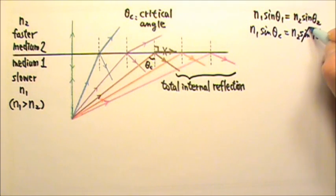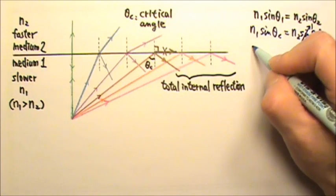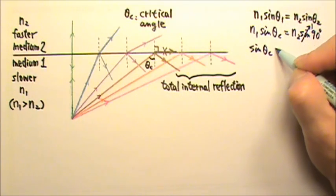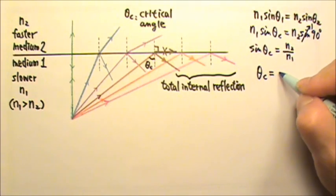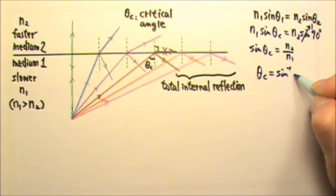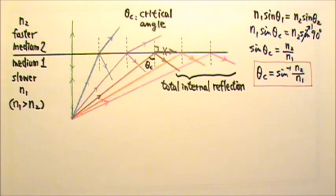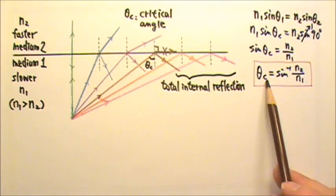Since sin(90 degrees) is 1, that means sin(critical angle) equals N2 over N1. That means the critical angle can be found using inverse sin(N2 over N1). So this is the equation we use to find the critical angle.